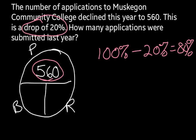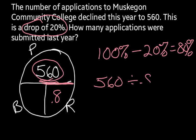I'm going to take that 80% as a decimal: 0.8. Because these two numbers are split by the dividing bar, I'm going to divide them. So 560 divided by 0.8, and my answer comes out to be 700. So we'd say 700 applications.